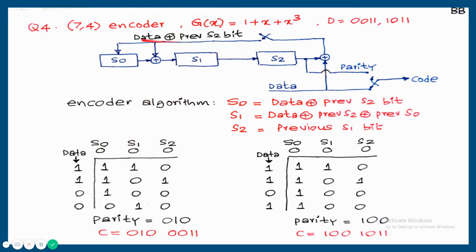Question 4: a 7,4 encoder with generator polynomial G(x) = 1 + x + x³. Now x is present, so XOR is needed between S0 and S1 — otherwise all connections are the same. Using this connection, a new algorithm is written. For data 0011, entering rightmost bit first gives sequence 1, 1, 0, 0. The parity bits come out as 0, 1, 0. So the output code is 0, 1, 0, 0, 0, 1, 1.